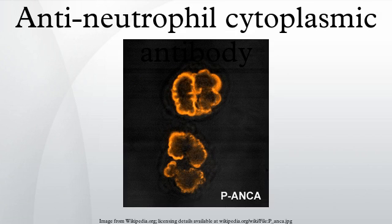Anti-neutrophil cytoplasmic antibodies are a group of autoantibodies, mainly of the IgG type, against antigens in the cytoplasm of neutrophil granulocytes and monocytes. They are detected as a blood test in a number of autoimmune disorders, but are particularly associated with systemic vasculitis, so-called ANCA-associated vasculitides.